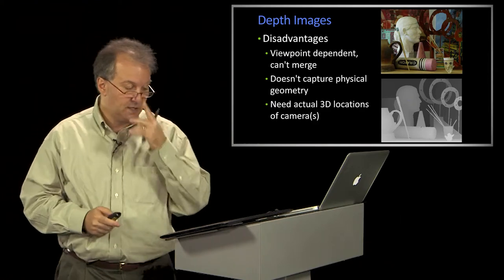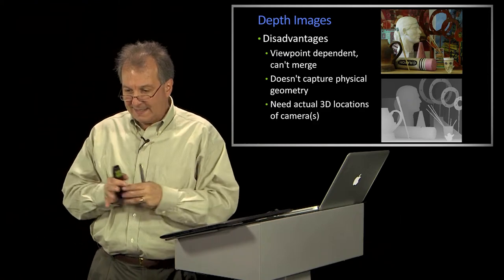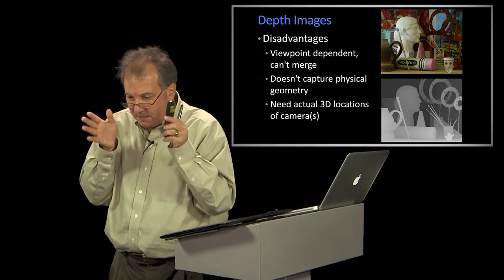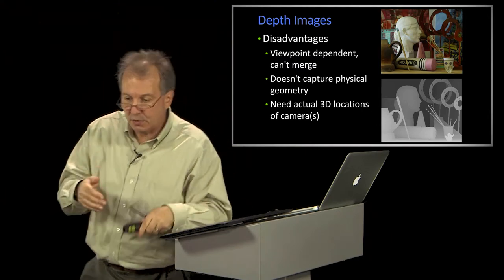There are, of course, disadvantages. One is that it's very viewpoint dependent, right? I've got this scene geometry, but my depth image is based upon where my camera is. So if I move over here, I've got a different depth image. And combining them is difficult because they're in the reference frame of my image. They're not in some natural reference frame that talks about the object.